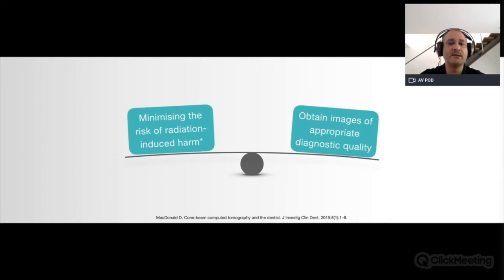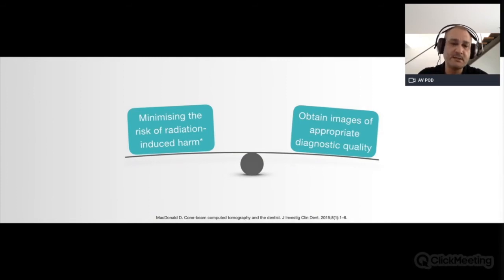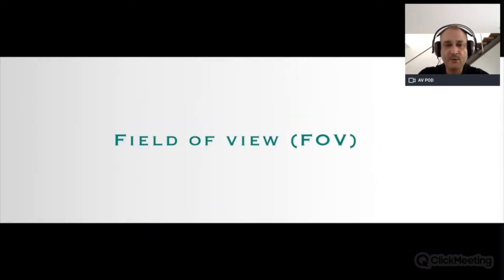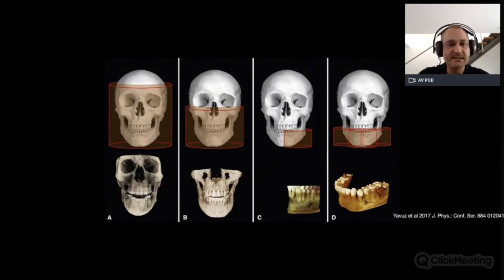We always have to weigh the risk of radiation against obtaining a diagnostically valid image. We must take all factors into account — we want to minimize radiation while still getting quality images. The field of view is the area of interest we are going to capture and expose to the x-ray beam. Here is an example of an area selected and the result we get.